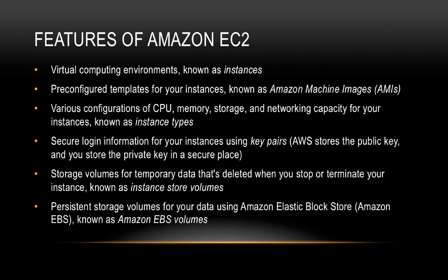It provides secure login information for your instances using key pairs. AWS stores the public key and we store the private key. There are two types of storage volumes for Amazon EC2 instances. Storage volumes for temporary data get deleted when you stop or terminate your instance — this is known as an instance store volume. On the other hand, we could also use persistent storage volumes using Amazon Elastic Block Store, also known as Amazon EBS.